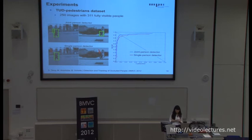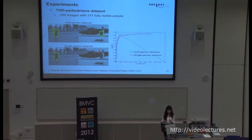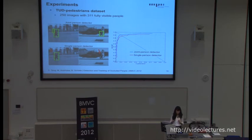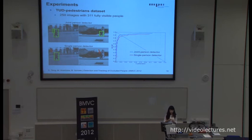We begin our analysis with the TUD pedestrian dataset. In this dataset, there are about 300 fully visible people, and our joint person detector outperforms the single person detector. During training, we augment the joint person detector's training images with synthetically generated images, making it more robust to different imaging conditions. This result also shows that combining double person detection and single person detection into a single model does not result in a performance penalty for fully visible people.